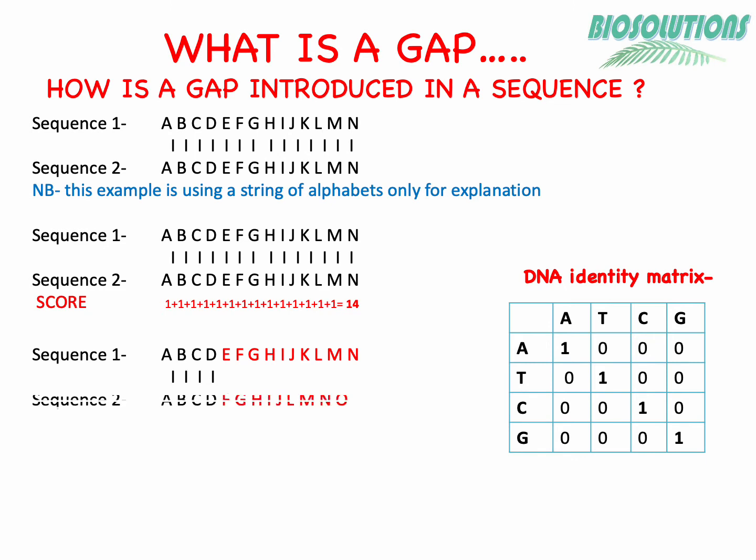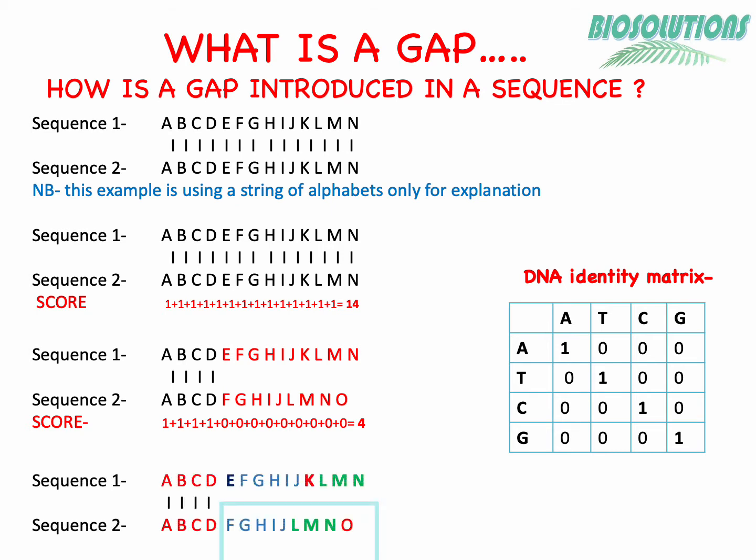If any base in two sequences does not match, then it is considered a mismatch like here. If every mismatch is assigned a value of 0 or a negative value, the score will be very low.